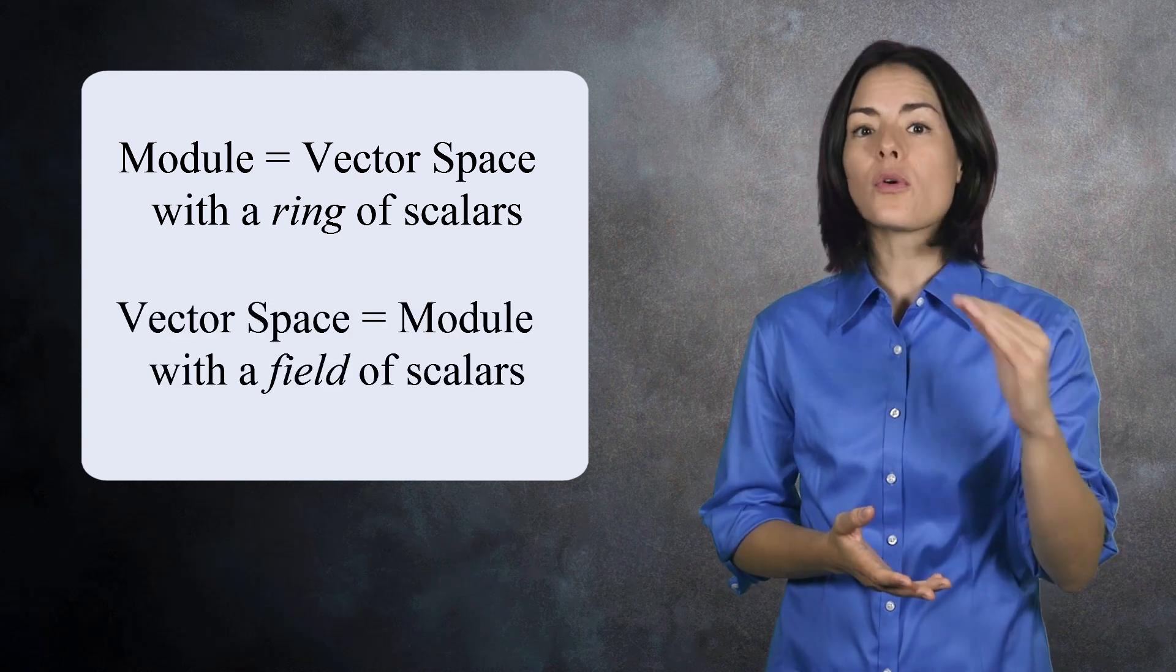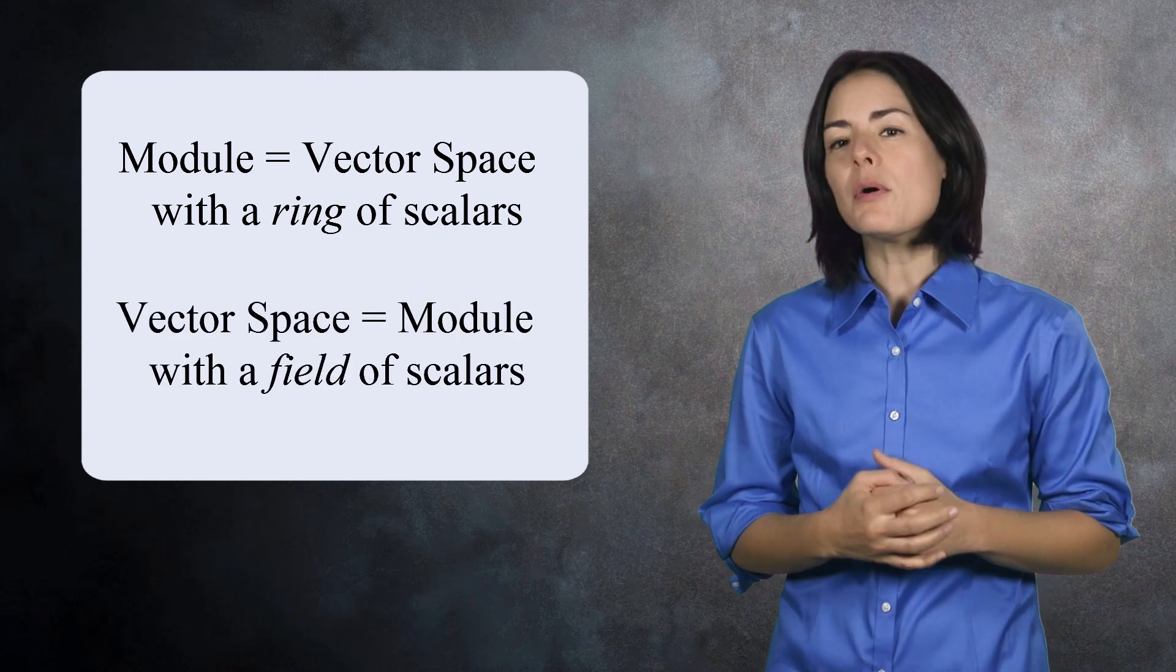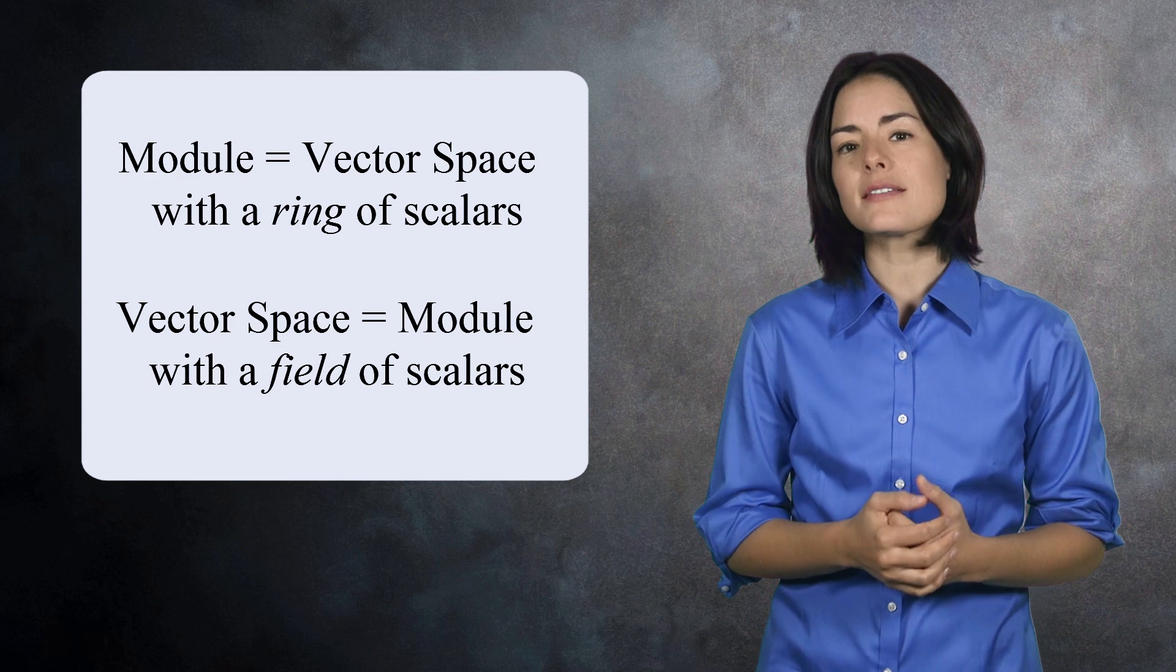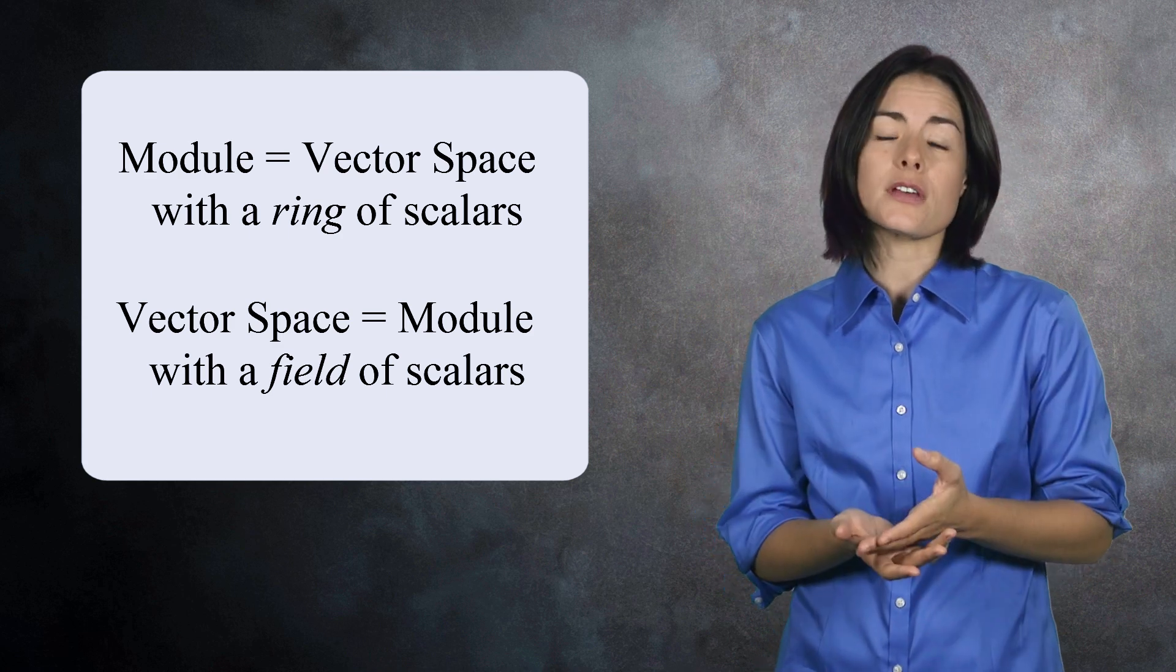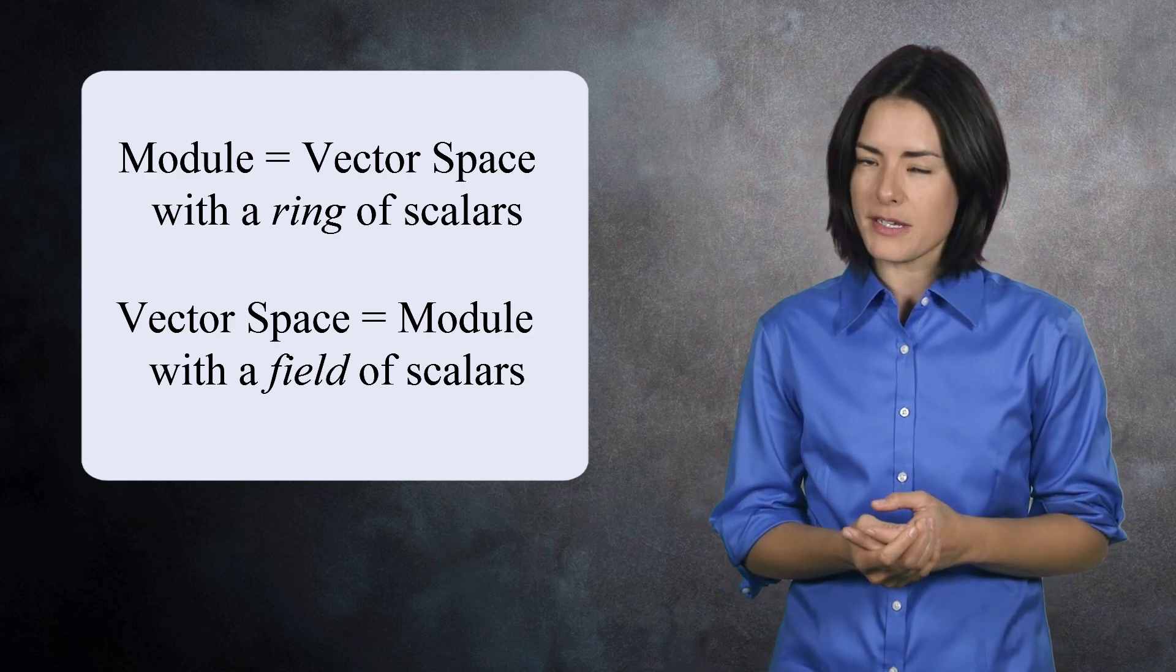Alternatively, you could say a vector space is a module where the scalars are a field. Both statements are correct. In fact, some people will learn about modules first, while others learn about vector spaces first. But regardless of the path you took to this point, it's time to see some examples of modules and talk about the ways in which modules and vector spaces differ from one another.